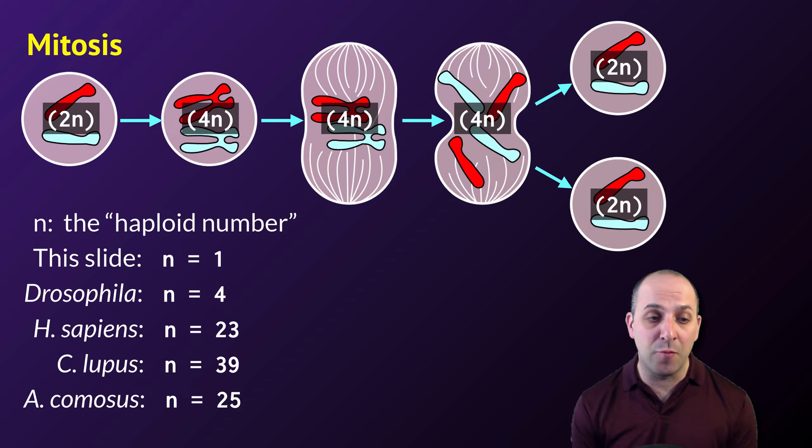In something like fruit fly, Drosophila melanogaster, N is four. In humans, for instance, it's 23. The haploid number is species-specific. Different species have different haploid numbers. And since different organisms have different haploid numbers, it's easiest to generalize what's happening by representing the haploid number algebraically with the letter N.